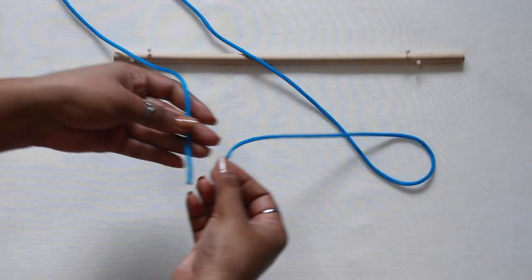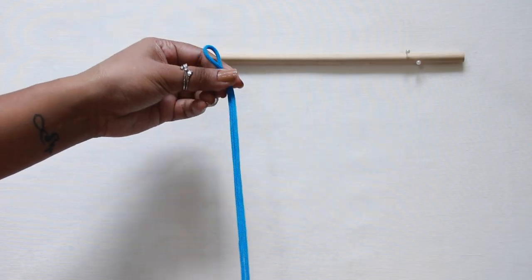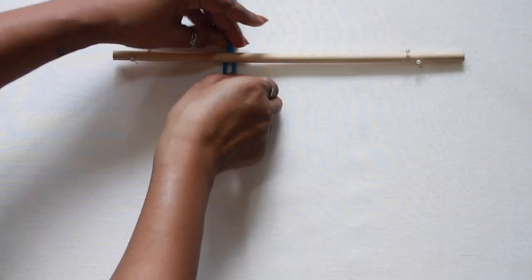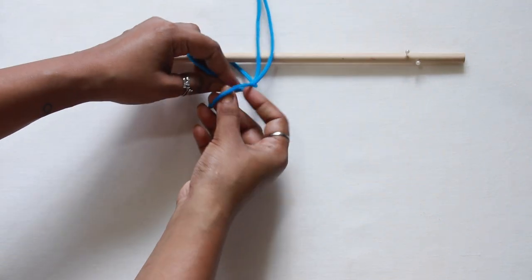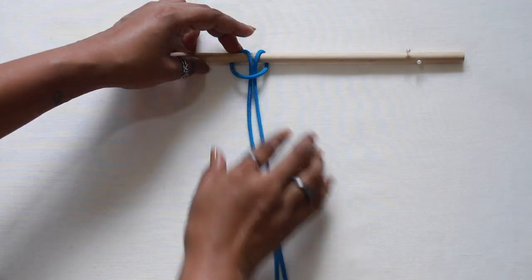For a basic square knot, you need 4 strands. So start making lark's head knot. For 4 strands, you need to make 2 lark's head knots.